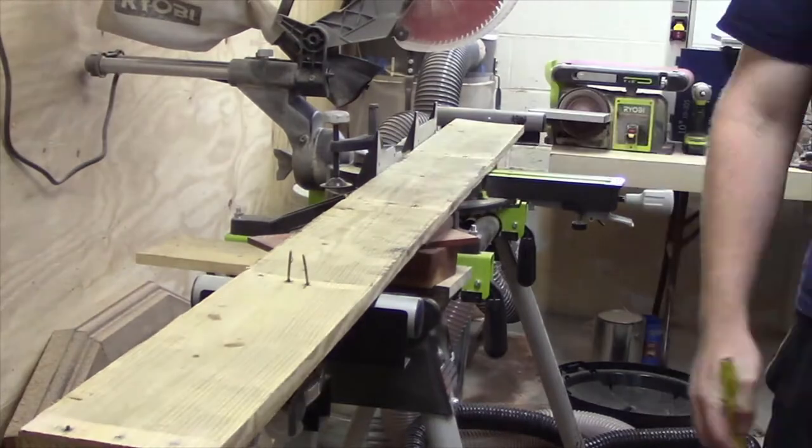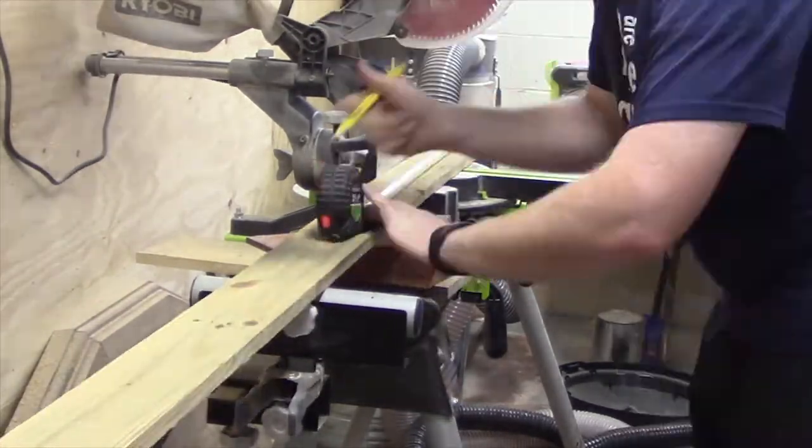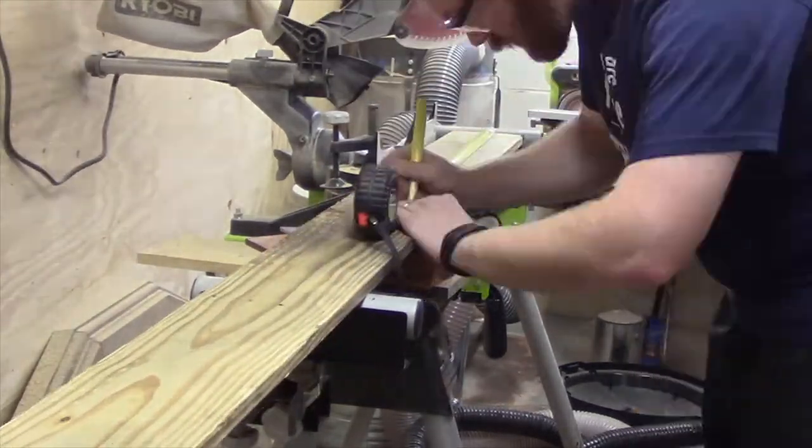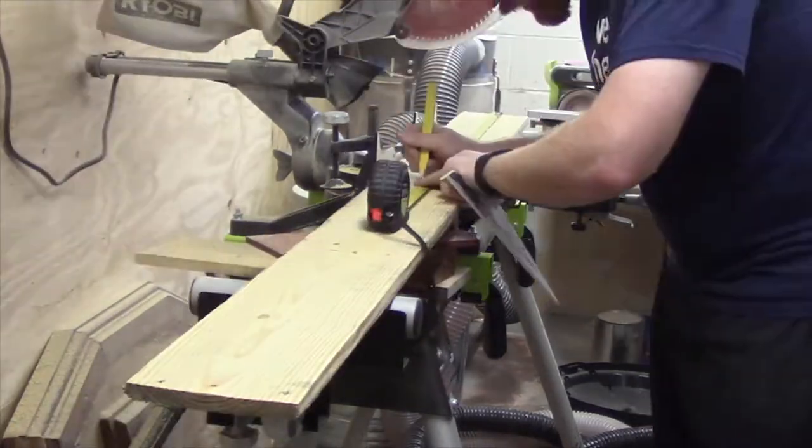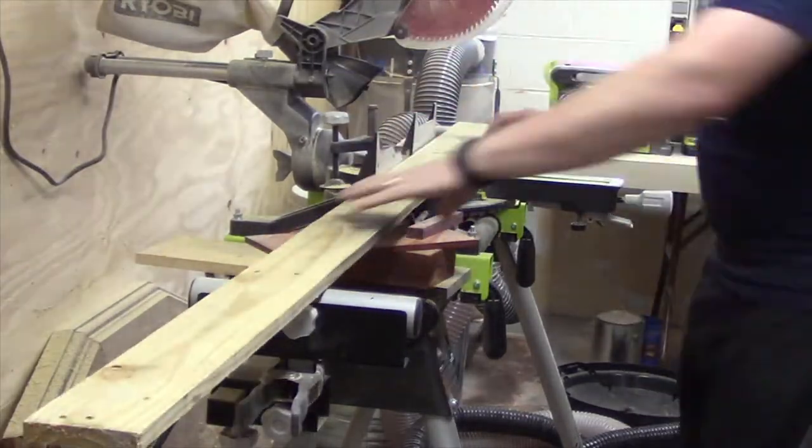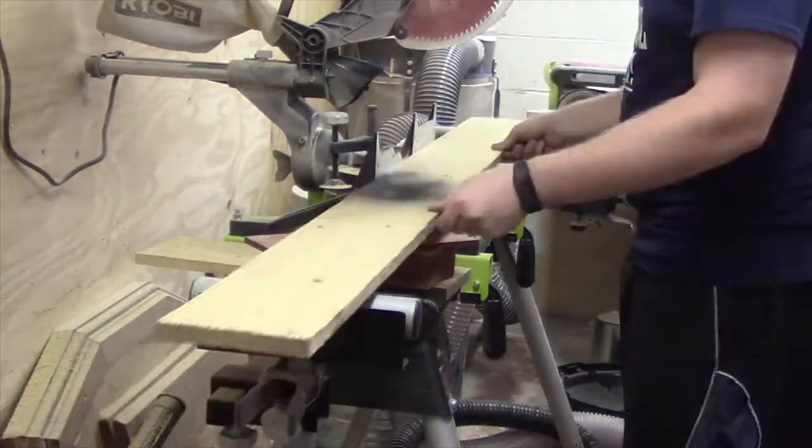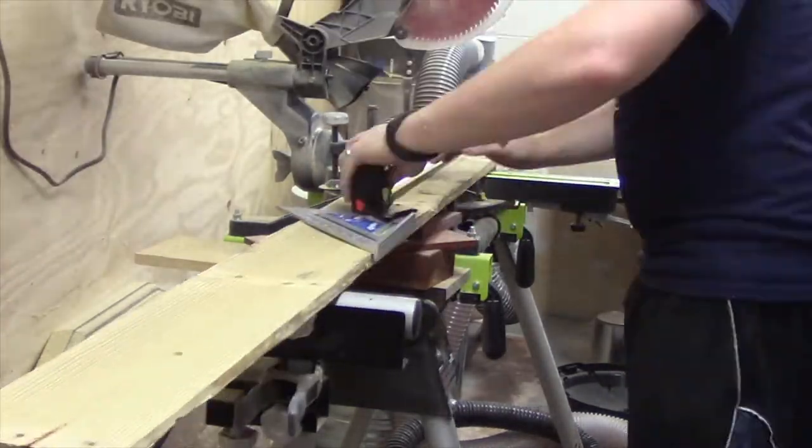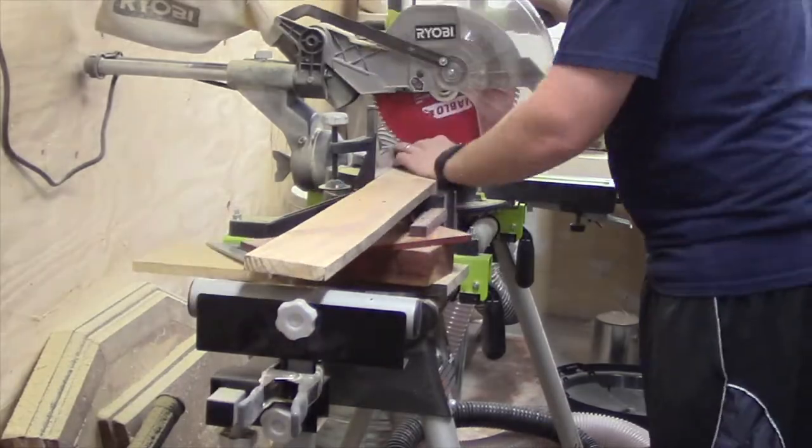After breaking down the pallet, I measured each of my boards to 34 inches and I also avoided the nails. At this point there are still off-cuts of nails in the wood, but I made sure to avoid those when I was cutting them to length.